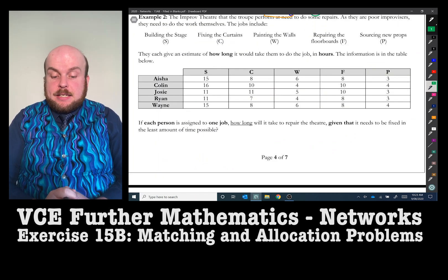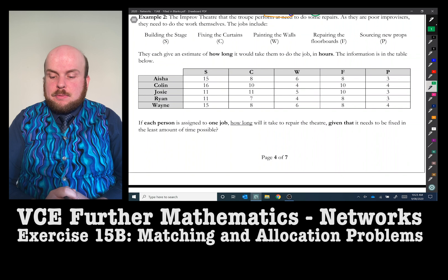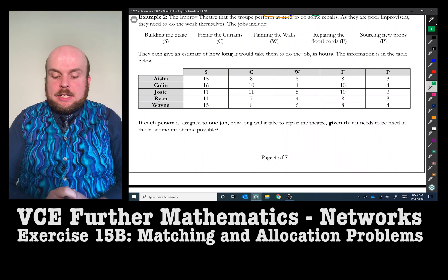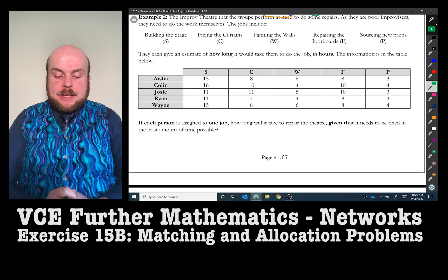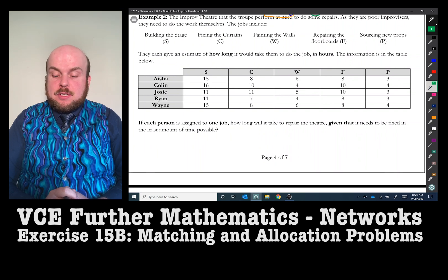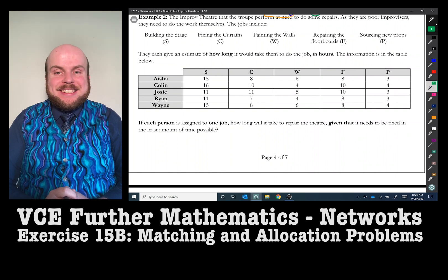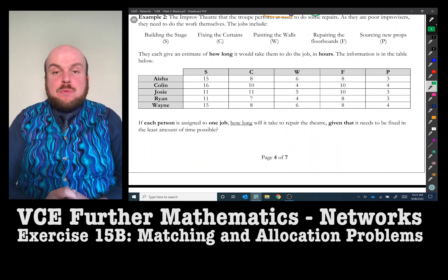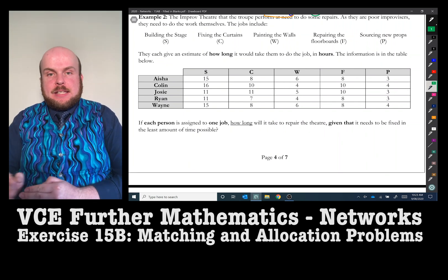Example two, the improv theater has three performers who need to do some repairs. As they are poor improvisers, they need to do the work themselves. The jobs include building the stage or S, fixing the curtain C, painting the walls W, repairing the floorboards F or sourcing new props P. They each give an estimate of how long it would take them to do the job in hours. The information is in the table below. So if each person is assigned one job, how long will it take to repair the theater, given that it needs to be fixed in the least amount of time possible? We shall assume that each job is done one after the other.